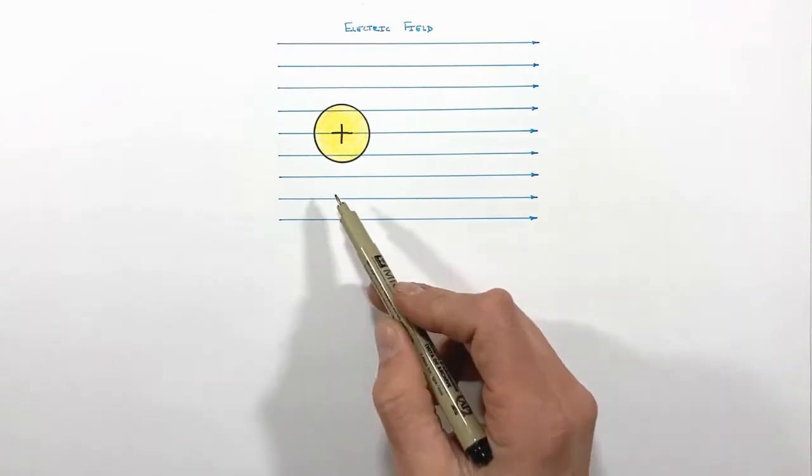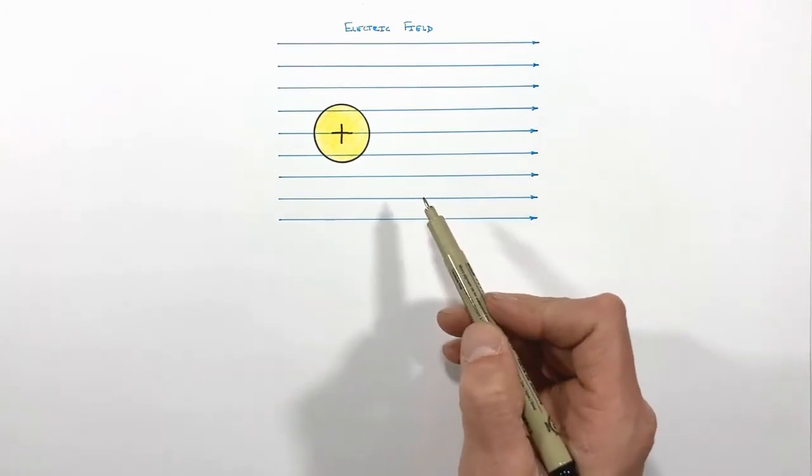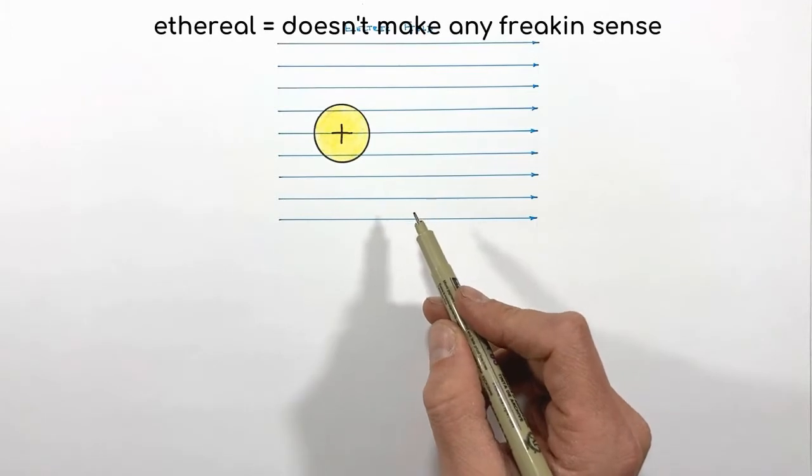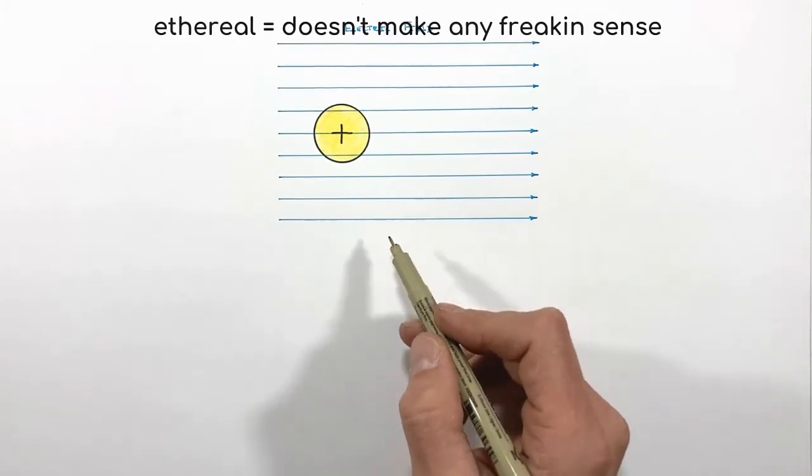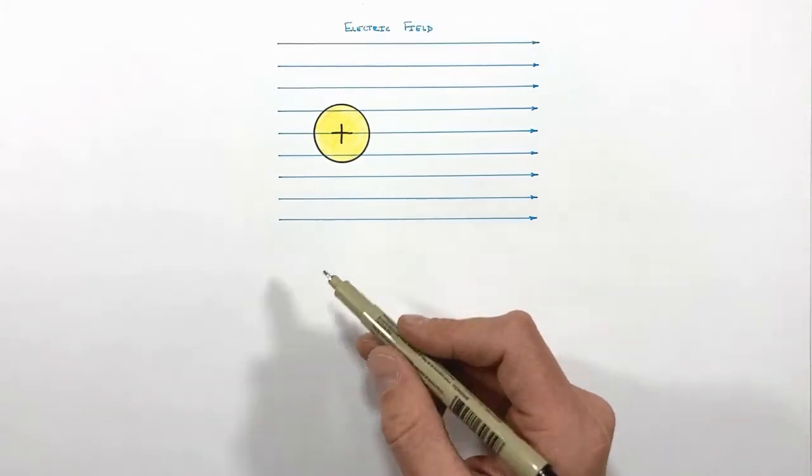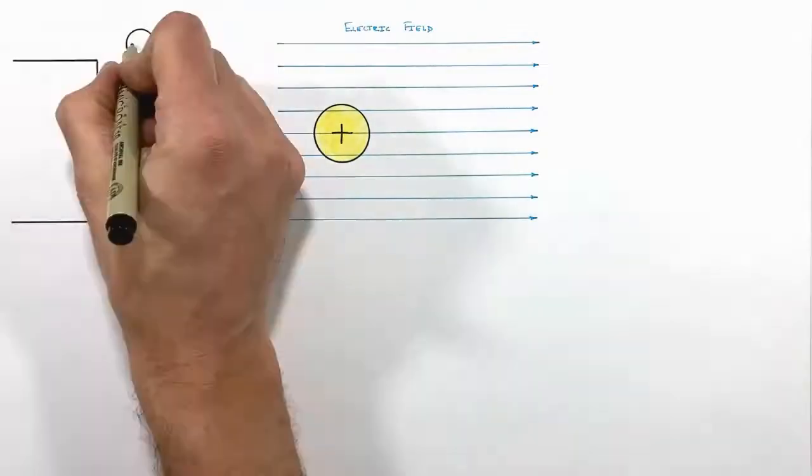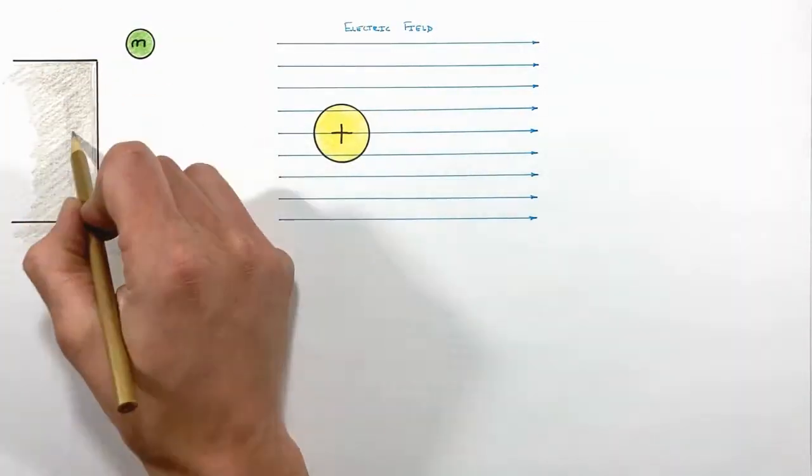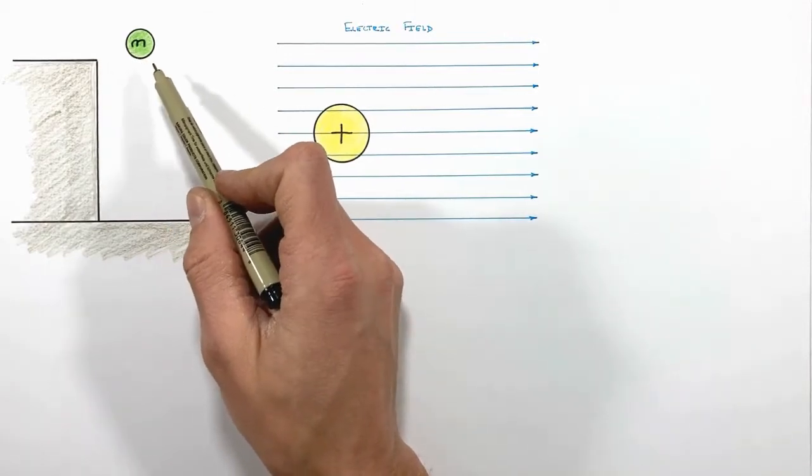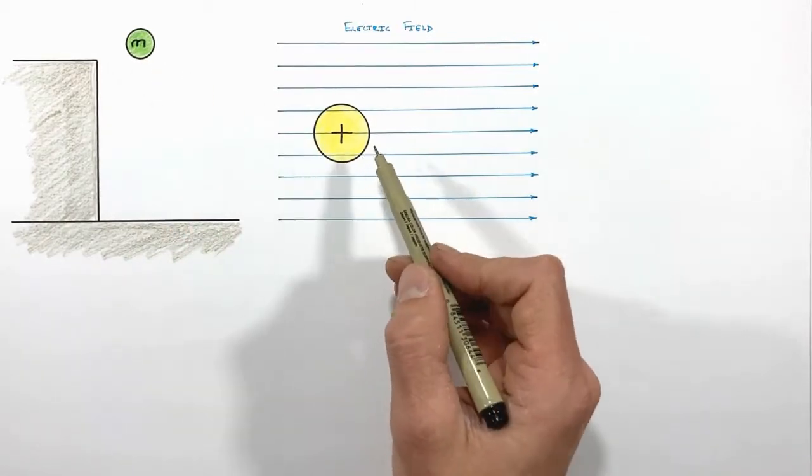Now, difficult or not, the idea of a charge in an electric field is a bit ethereal. So we're also going to take a look at the situation of a ball falling off a cliff, because that's a situation you're already familiar with. A ball falling off a cliff is going to behave much like a charged particle in an electric field.